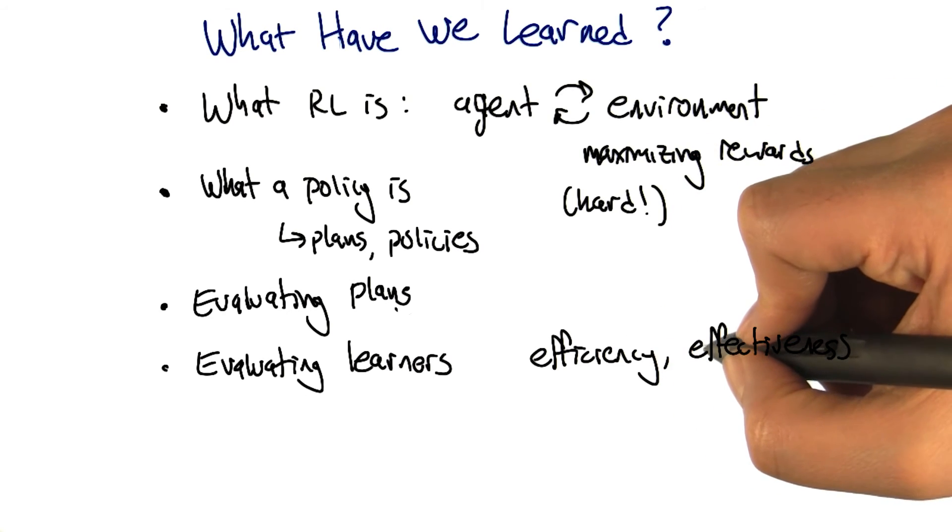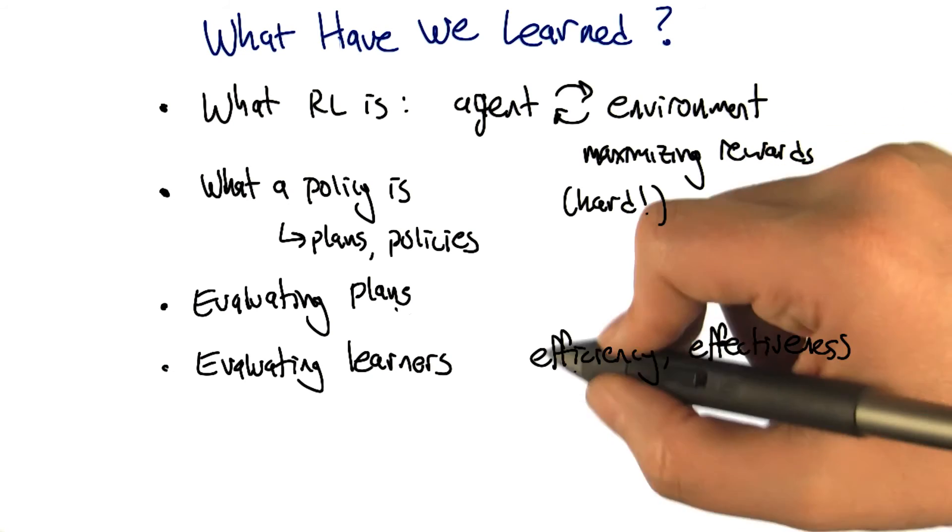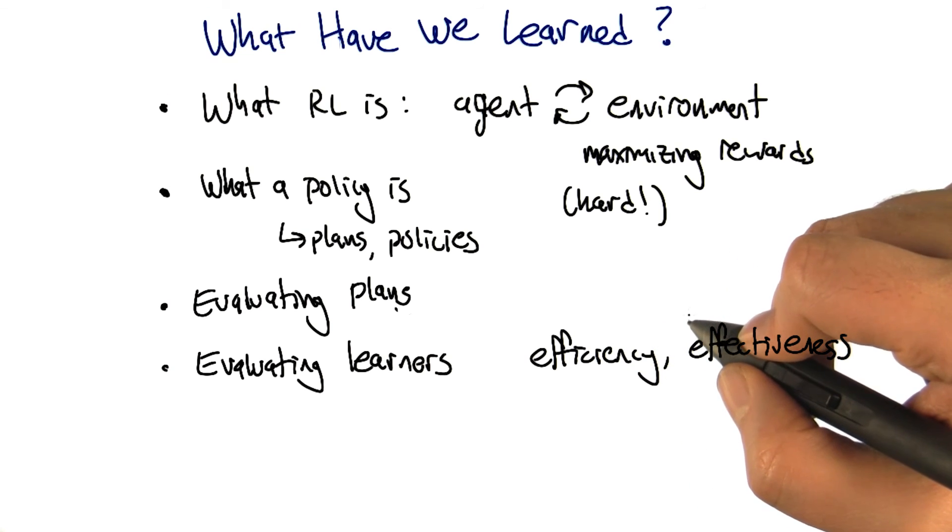Right, and so we're going to make some choices so that we have concrete algorithms that we can present and analyses that we can present. But it's worth keeping in mind that some of these things are kind of arbitrary. I mean, they're justified, but there's other things that would also be justified. That seems fair in machine learning.